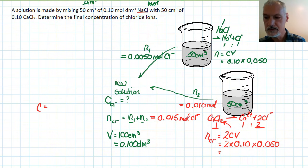So now when I put these two together, I get 0.015 moles of chlorine ions. Concentration equals number of moles over the volume, so 0.015 divided by 0.1.